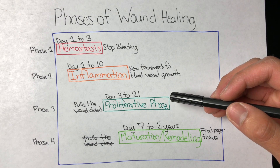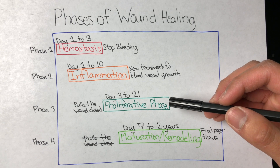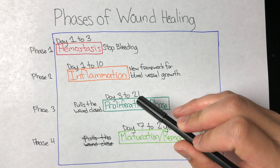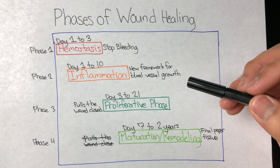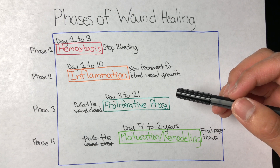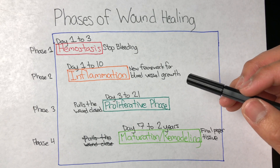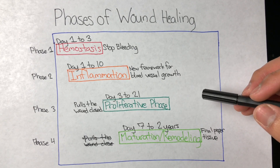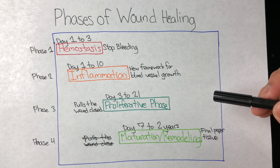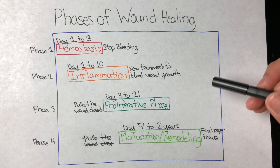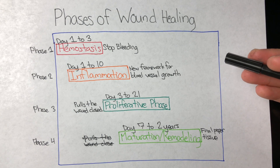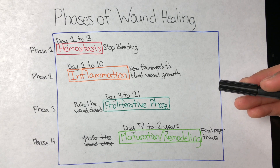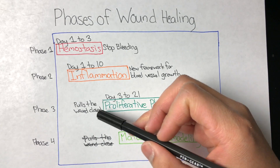The third phase of normal wound healing is the proliferative phase, which lasts roughly from day three to day 21. The proliferative phase is signaled when the formation of new tissue is noticed. In this phase, capillary buds and granulation tissue start to fill in the wound, allowing epithelial cells to start migrating over. Skin integrity is restored towards the ending half of the proliferative phase, with wound closure being the ultimate goal.